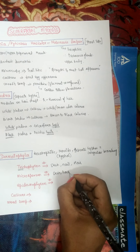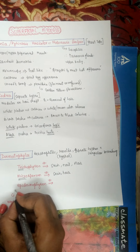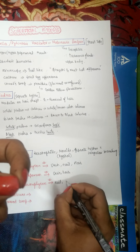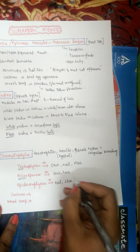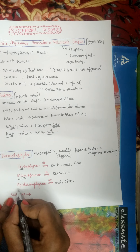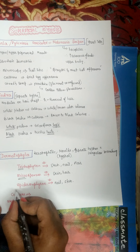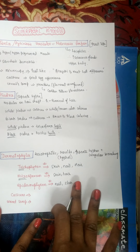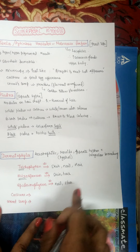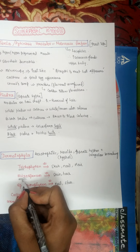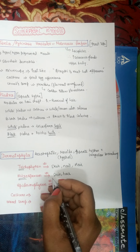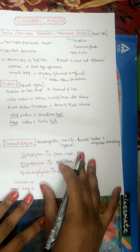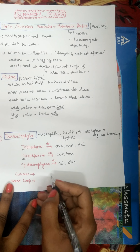Microsporum affects skin and hair. Epidermophyton — think of the nail region — affects nail and skin, but not hair. So if an exam question asks which region Epidermophyton cannot cause a lesion in, the answer is hair. Trichophyton: all three; Microsporum: skin and hair; Epidermophyton: nail and skin.